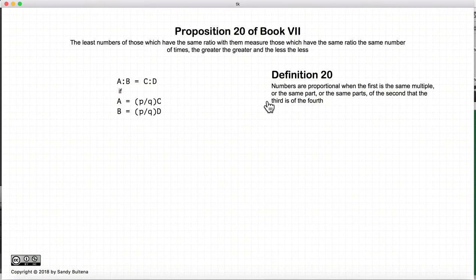Before we begin, I want to remind everyone what the definition is of proportional. Proportional basically states that numbers are proportional if the first is the same multiple of the third as the second is of the fourth, or in other words, this equation. So that's the definition of proportional.